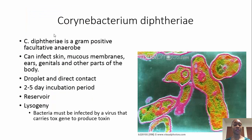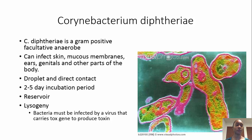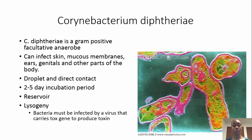C. diphtheriae is a gram-positive facultative anaerobe. As you can see in this picture, it is bacillus-shaped. It can infect really any part of the body, but mainly affects mucous membranes, which results in respiratory diphtheria. It can be spread by droplet contact and direct contact. The reservoir is humans — the only known reservoir of Corynebacterium diphtheriae.